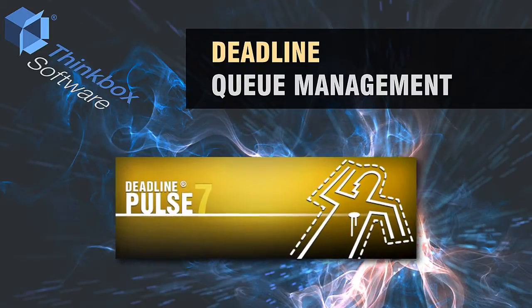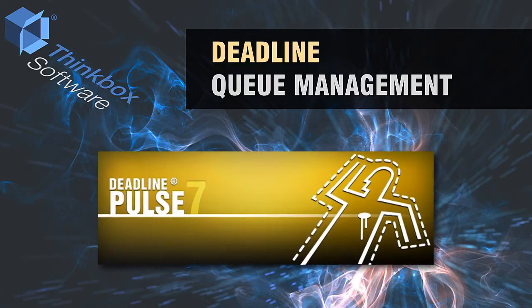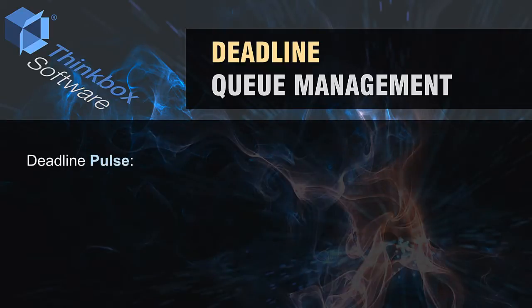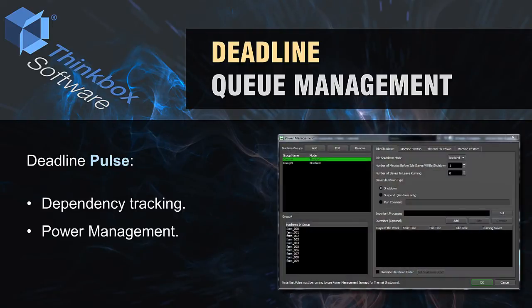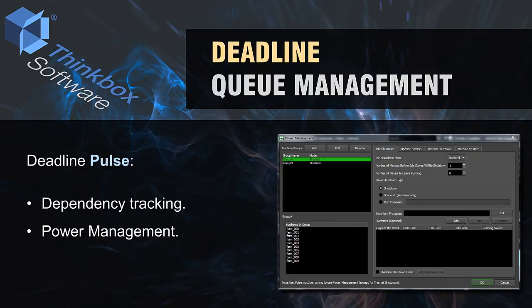Deadline features an augmentation program called Pulse that handles various queue maintenance functions. Pulse helps track the state of complex job dependencies to ensure a job can be triggered as soon as other jobs on which it depends have completed. Additionally, Pulse adds power management features for automatically turning off or on banks of physical computers based on scheduling options, thermal conditions, and the load in the queue.